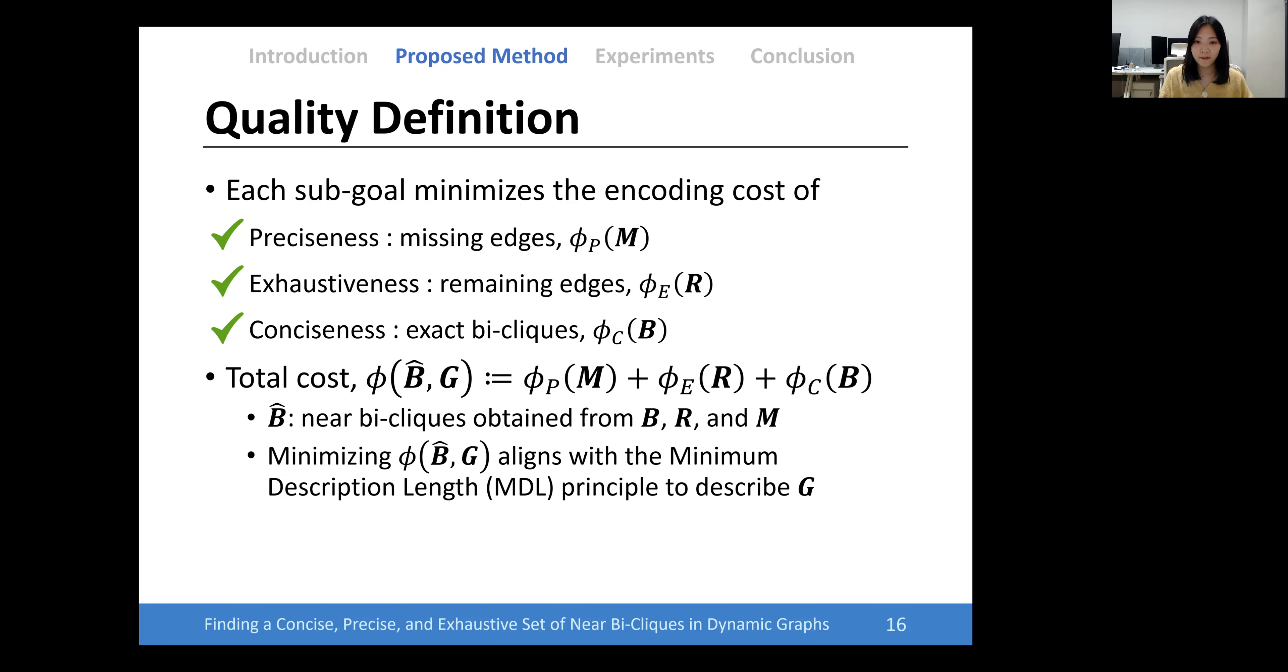Since the input graph can be described using M, R, and B, minimizing the sum of three encoding costs aligns with the minimum description length principle to describe the input graph.